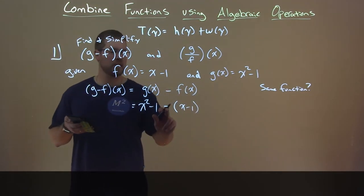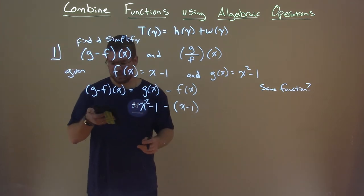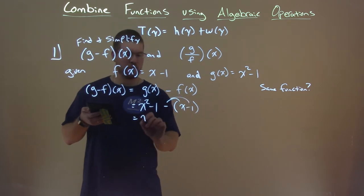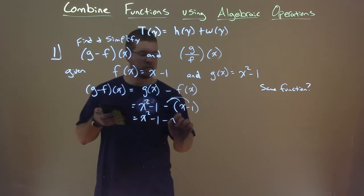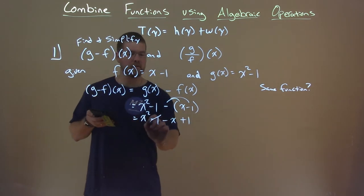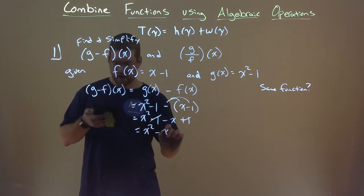Now, be careful with the subtraction sign. We're going to have to apply that to all parts there. All right, and in doing so, right, we bring the subtraction sign over. So we have x squared minus one minus x plus one. The ones cancel, and we're left with x squared minus x.